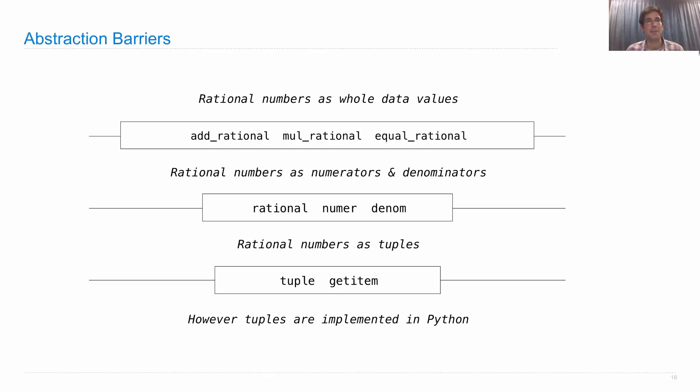That is, they might be combined with each other through addition, multiplication, or tested for equality, but parts of the program that treat rational numbers as whole data values won't ever inspect their parts.